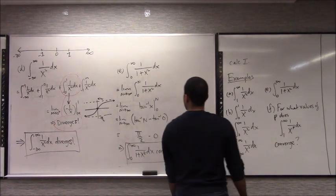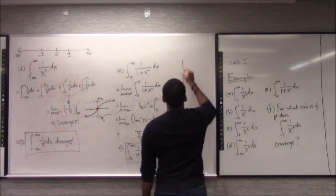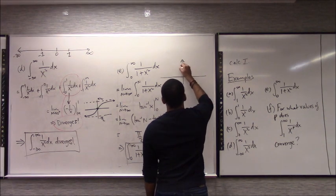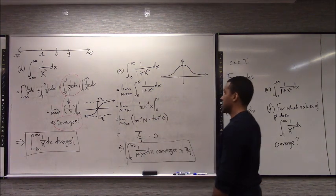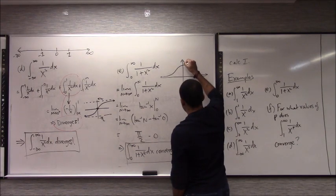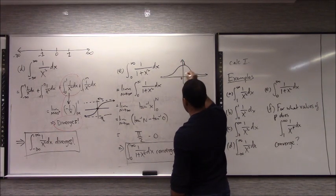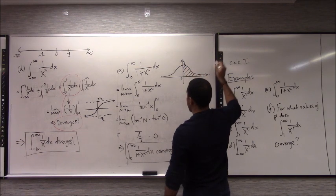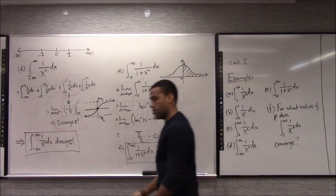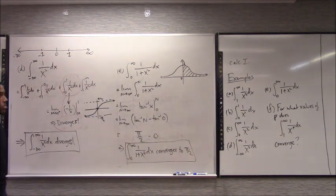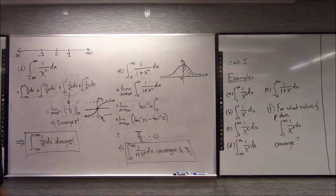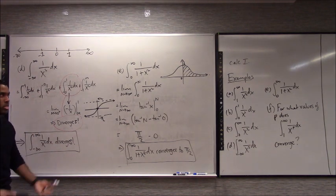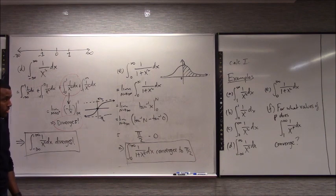The 1/(1+x²) graph actually looks a lot like a bell curve, going up to 1 at x = 0. If you measure the area from 0 to infinity under that, it's π/2. This is sort of telling you why something like the normal distribution in statistics actually even makes sense — it's really an improper integral when you think about it.